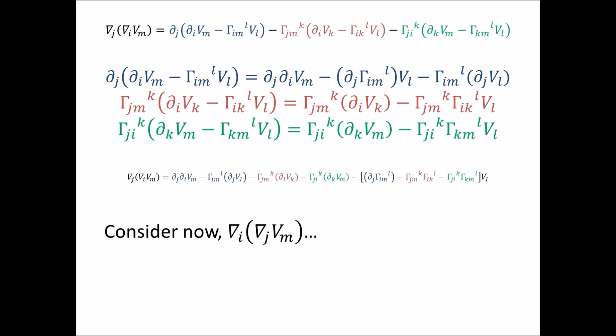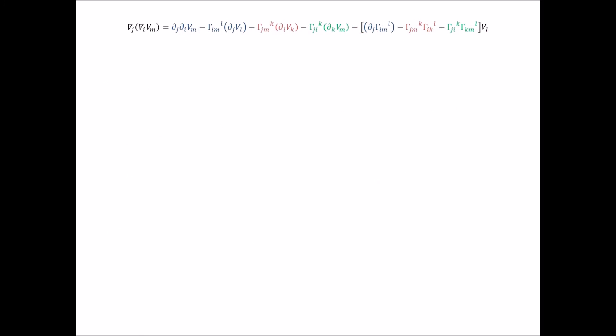So I'm not going to go through the entire process again. But you do the exact same thing. Just keeping an eye on your indices and making sure that you're doing all of your contractions properly. And you're going to get something that looks like this. It looks very similar to the first result. But obviously some of the indices are changed around.